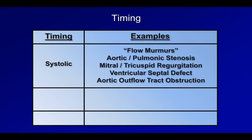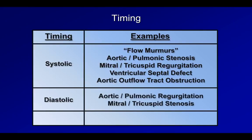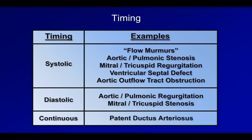Etiologies of systolic murmurs include flow murmurs caused by hyperdynamic states or anemia, aortic and pulmonic stenosis, mitral and tricuspid regurgitation, VSDs, and aortic outflow tract obstruction which can be caused by hypertrophic obstructive cardiomyopathy. Diastolic murmurs include aortic and pulmonic regurgitation and mitral and tricuspid stenosis. Among American adults, detectable diastolic murmurs are almost always due to aortic regurgitation. Lastly, there are continuous murmurs — meaning components of the murmur are present in both systole and diastole — the only significant cause of which is a patent ductus arteriosus observed in infancy.